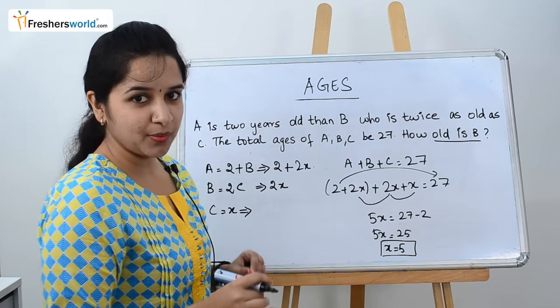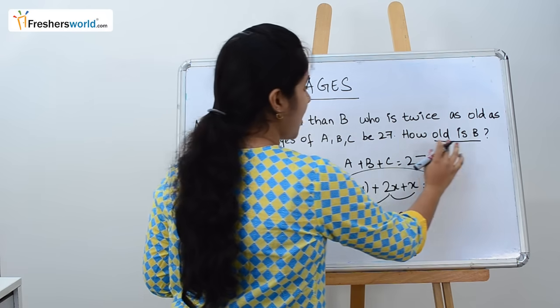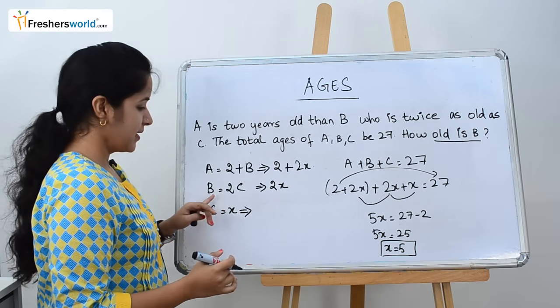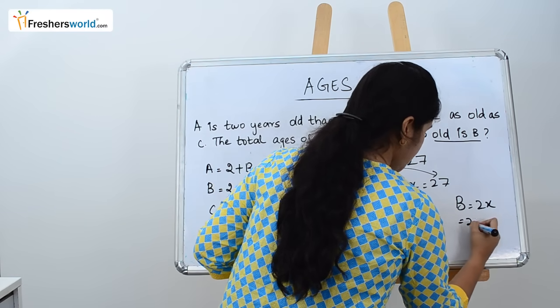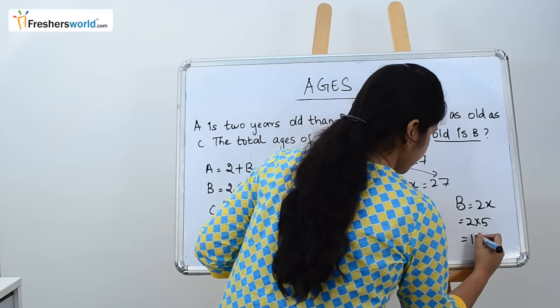We found X equals 5, but is that the question they asked? No. They're asking how old is B. B is nothing but 2X. So B equals 2X, which is 2 into 5, equals 10 years.